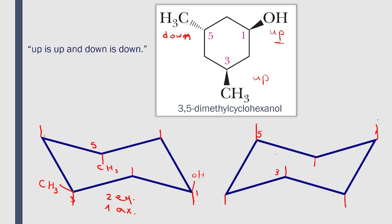In the second chair, the hydroxyl group is up, so it should be axial — it should be opposite to the first chair. At carbon number 3, the methyl group is up, so it is axial as well. And at carbon number 5, the methyl group is down, so it should be equatorial. So we have two axial groups and one equatorial.